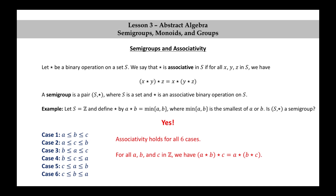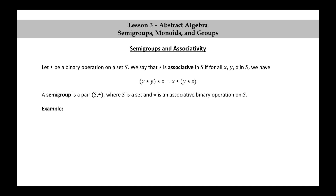So we have that for all A, B, and C in Z, (A star B) star C is equal to A star (B star C). Therefore, Z star is a semigroup.